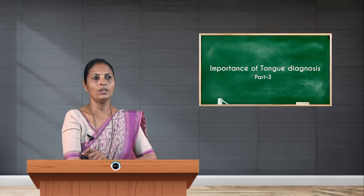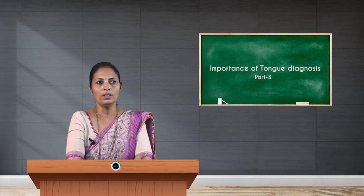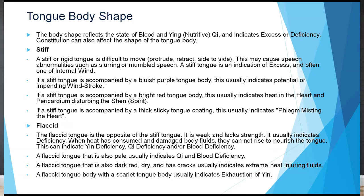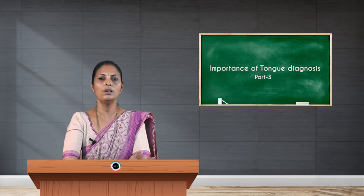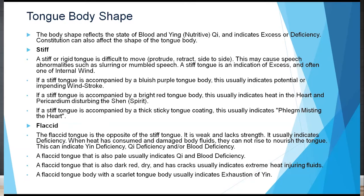As a general rule, the normal tongue shape changes only when pathological conditions persist for a longer period of time. The tongue body shape reflects the state of blood and nutritive qi — excess or deficiency — and constitution can also affect the shape. A stiff or rigid tongue is difficult to move or protrude, and may cause speech disorders or slurred and mumbled speech.